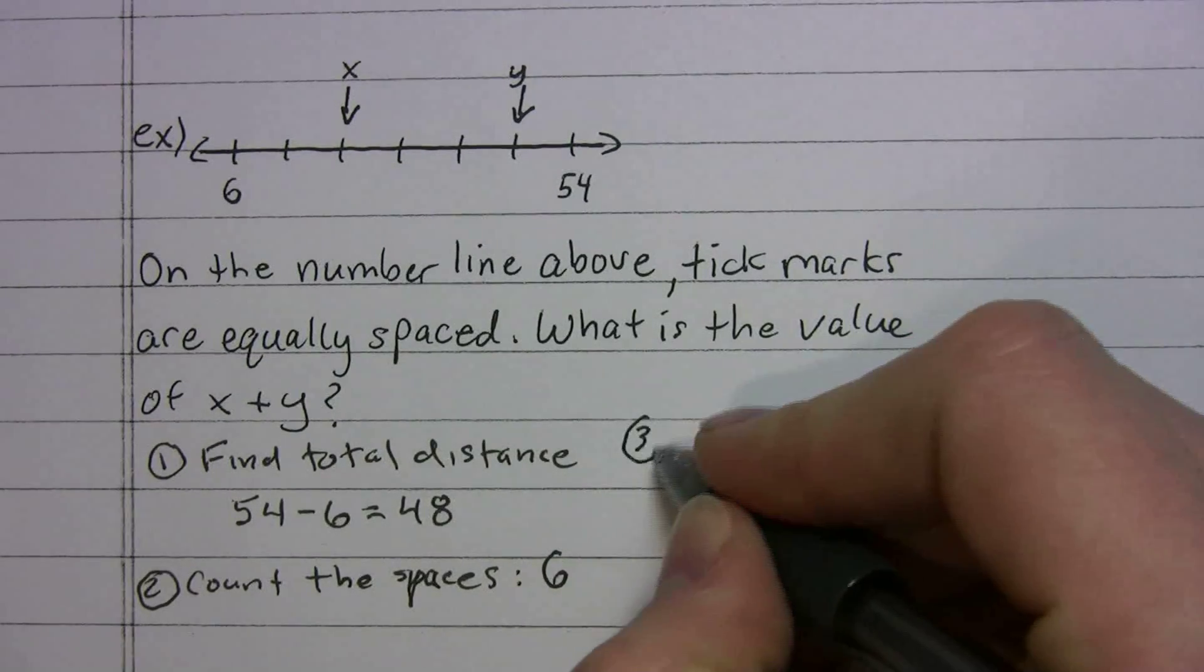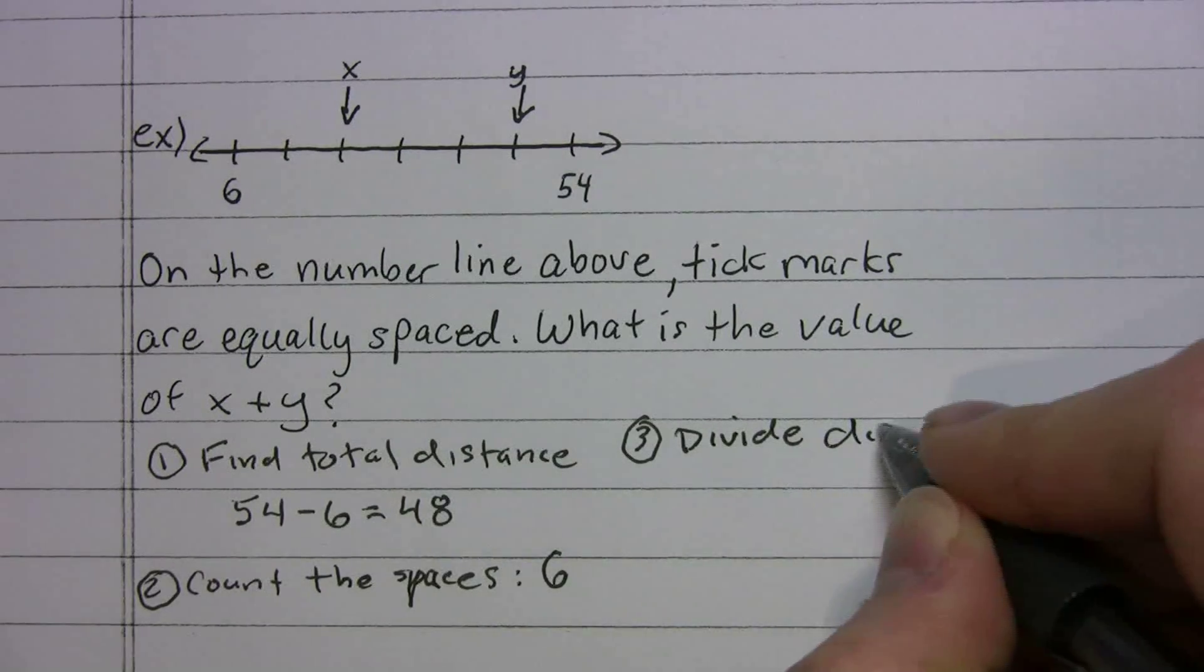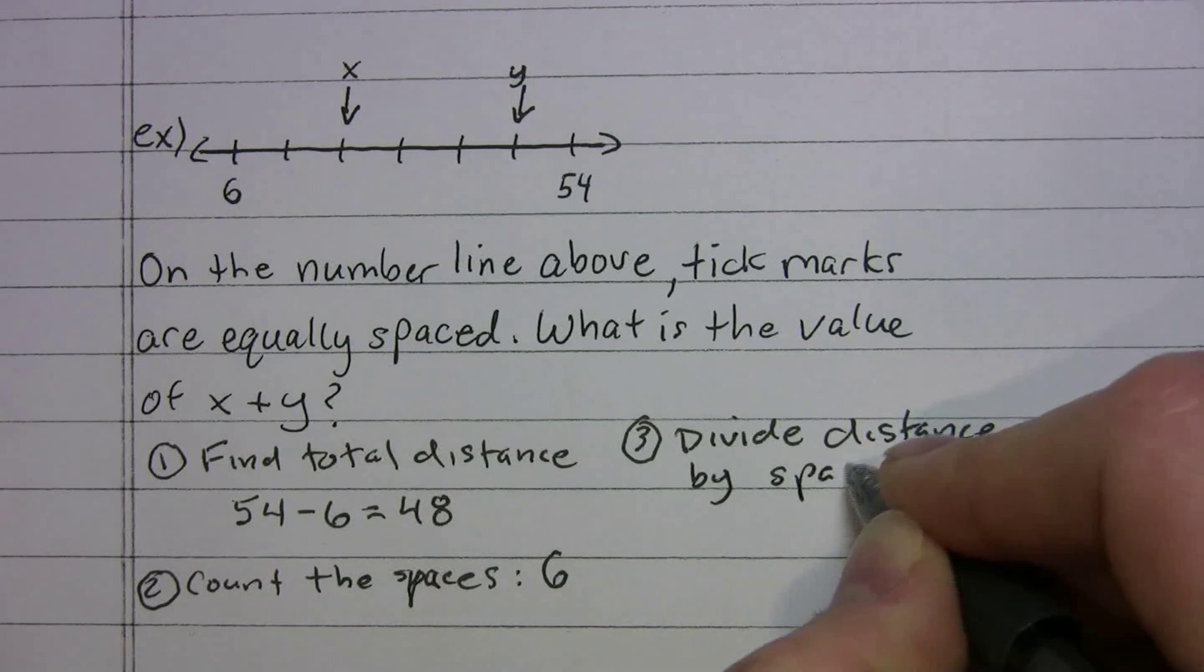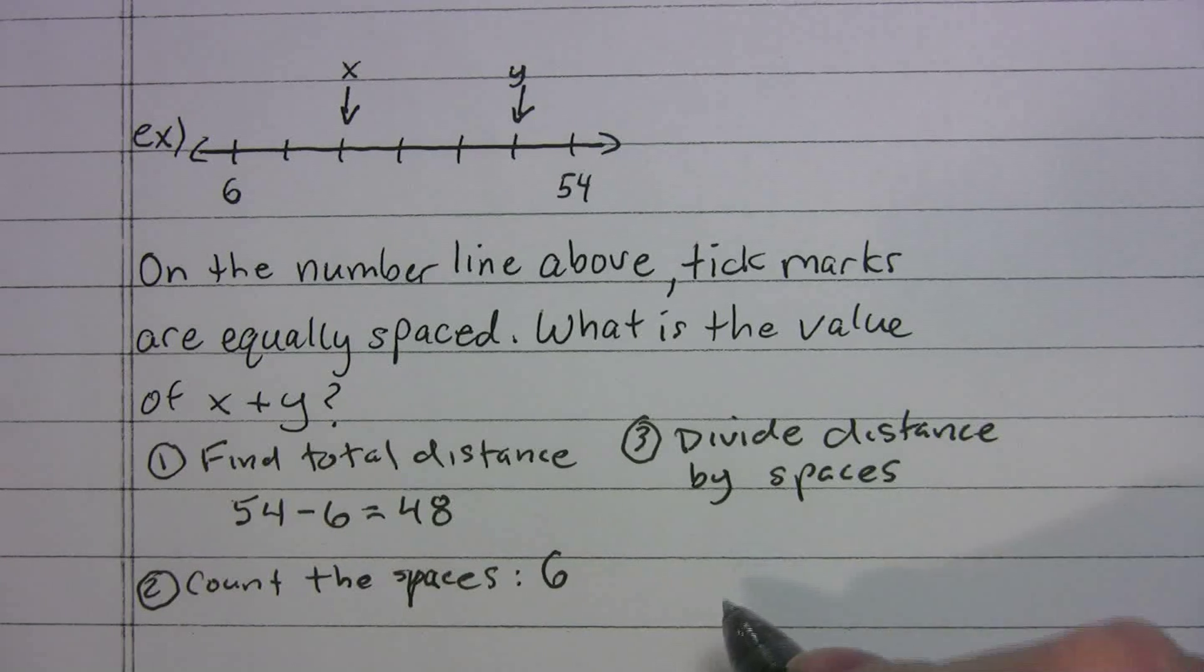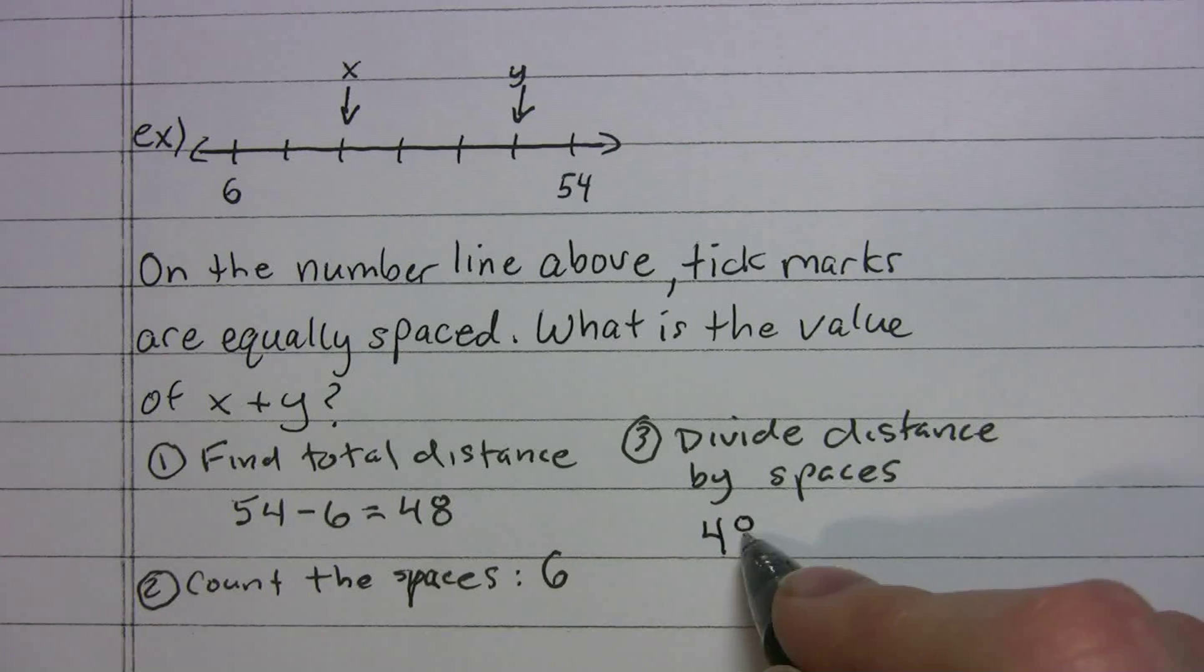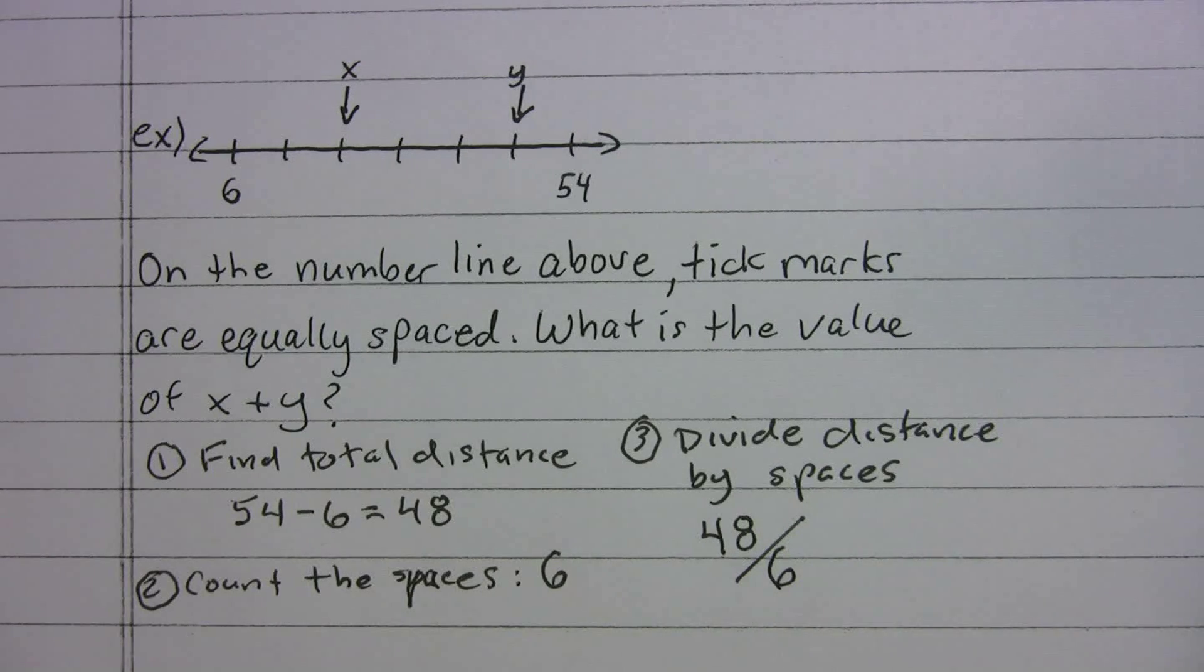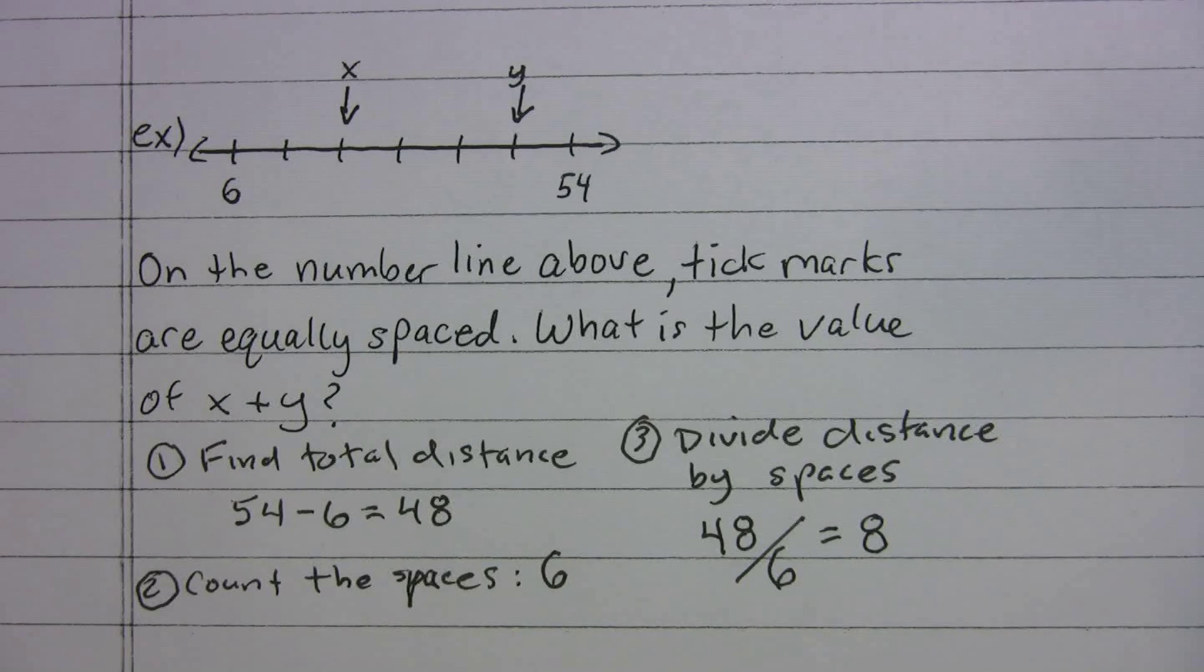Step three. Divide distance by spaces. And that's going to give you the length of each space. So the whole thing is 48. We're dividing by our spaces, we have six of them. That means that each one measures 8. So we can use that.